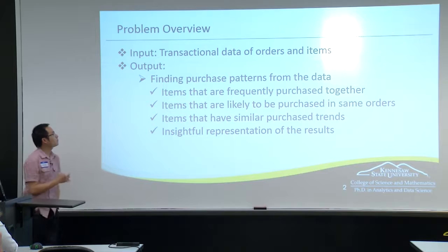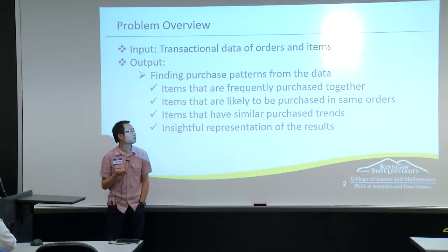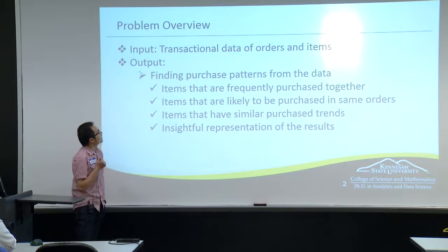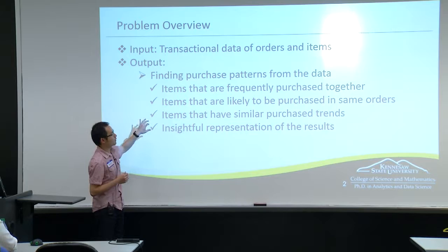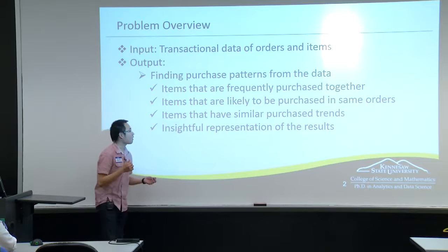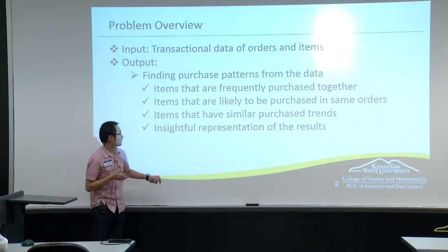Just some overview: the input to my project is transactional data, which has information on what people buy, how many, and when they buy it. The output is to cluster or group items together — what items people tend to buy together, what items have a high chain leading to other items being bought, or what items have similar sales over time. Then how we can represent the results in an insightful way for the clients.